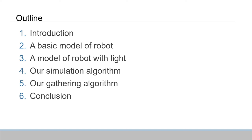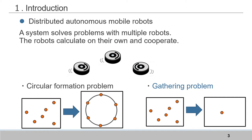Let me start with autonomous mobile robots. Distributed autonomous mobile robots are systems which solve problems with multiple robots. They calculate on their own and cooperate. In this system, many problems are considered. For example, a circular formation problem is that scattered robots make a circular arrangement. And the gathering problem is that robots gather at a point. We consider the gathering problem in this research.